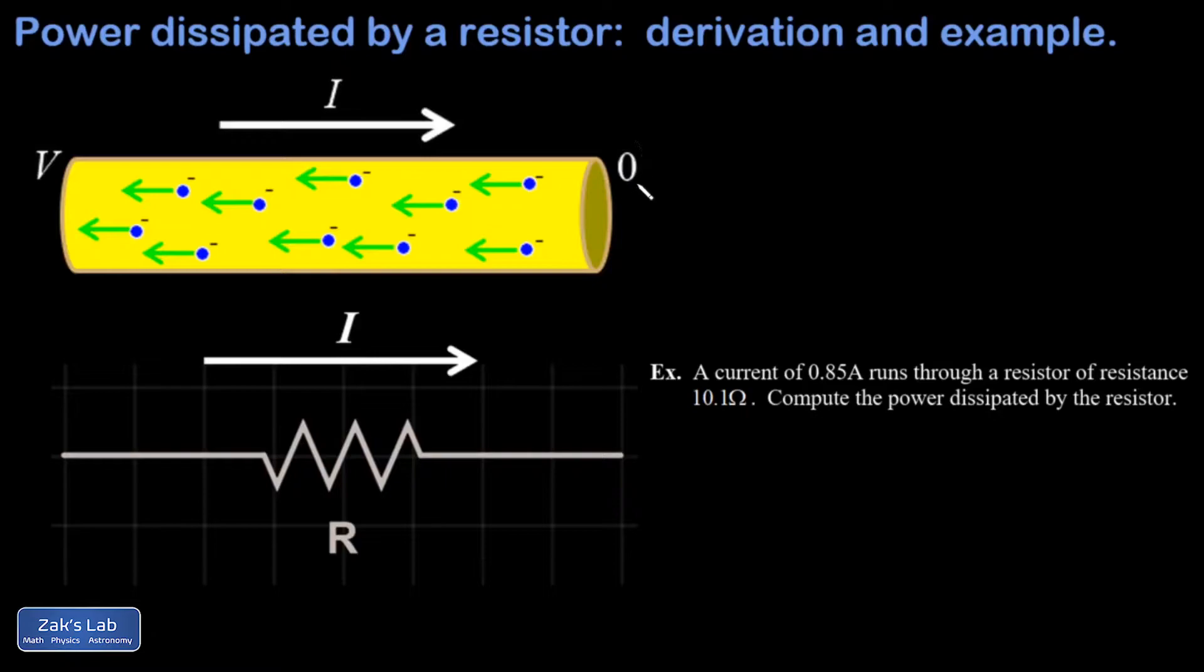So as these electrons move from a potential of zero to a potential of V, they're losing electric potential energy, but if the drift velocity is constant, it means their average kinetic energy is staying the same. This means that the electrons must be losing energy overall, and that energy has to go somewhere. Where does it go? It's actually dissipated as heat, and this is the power dissipated by a resistor.